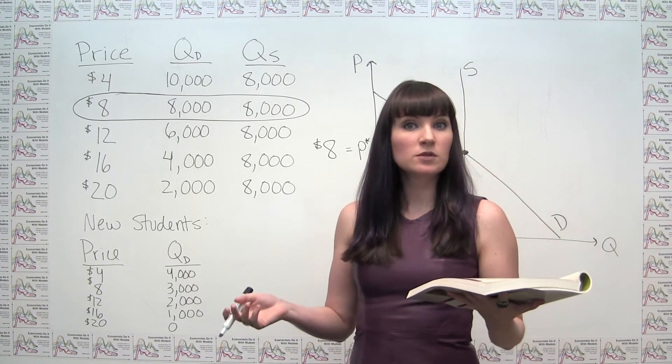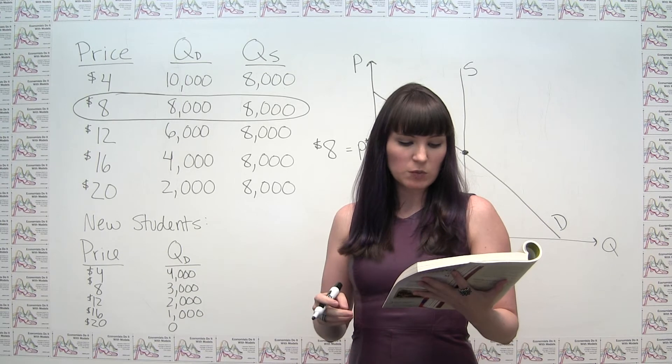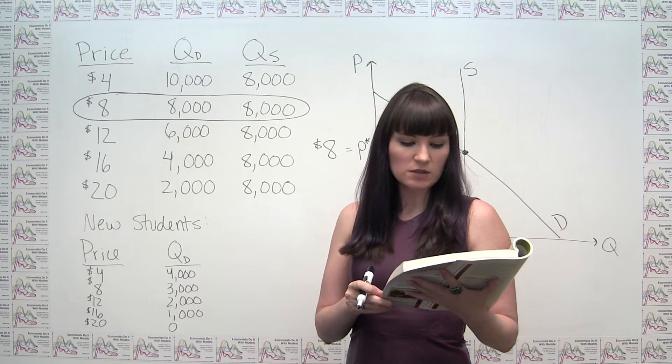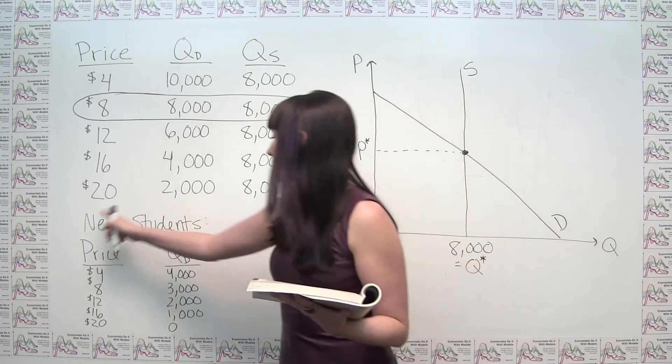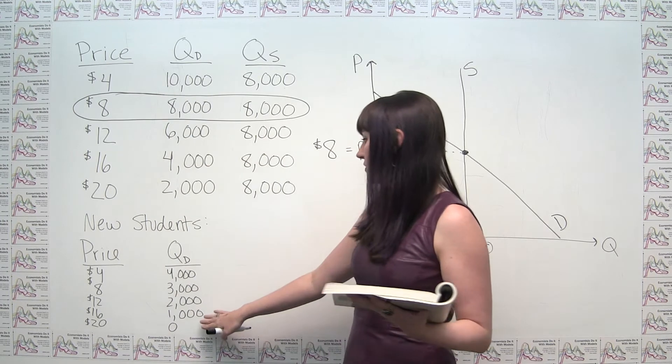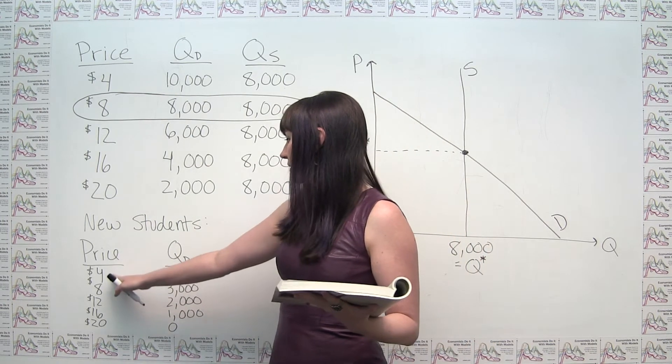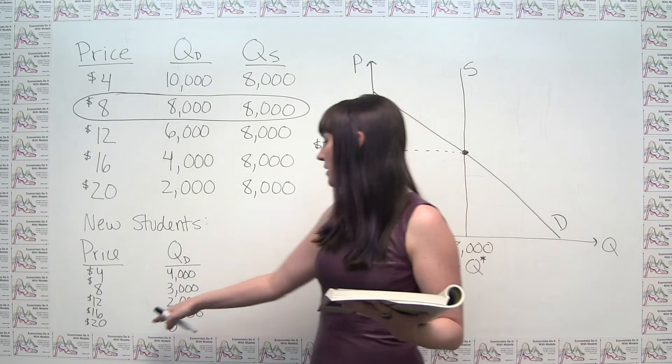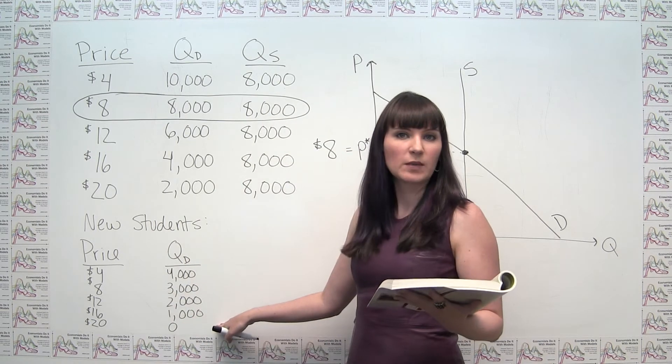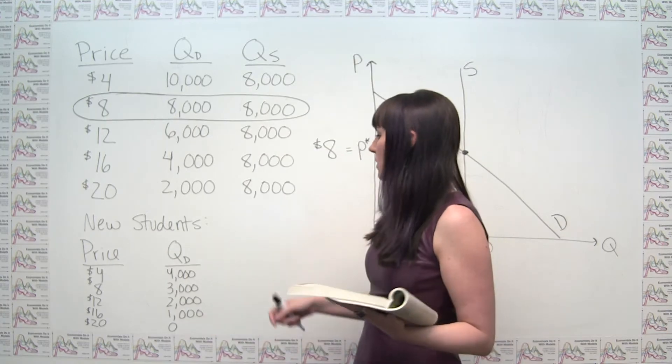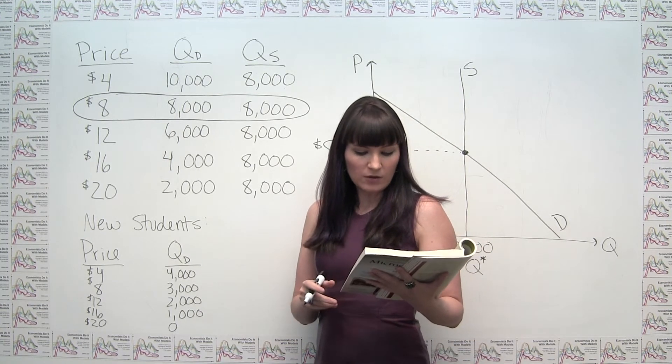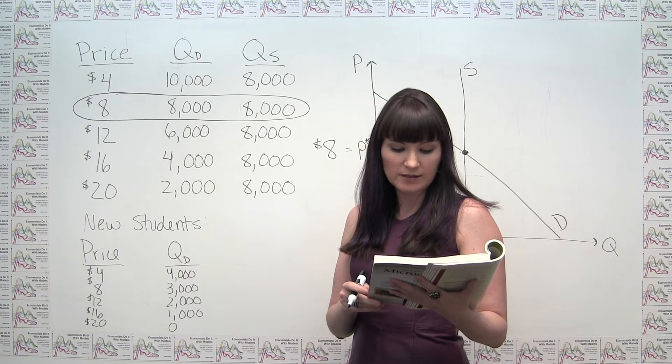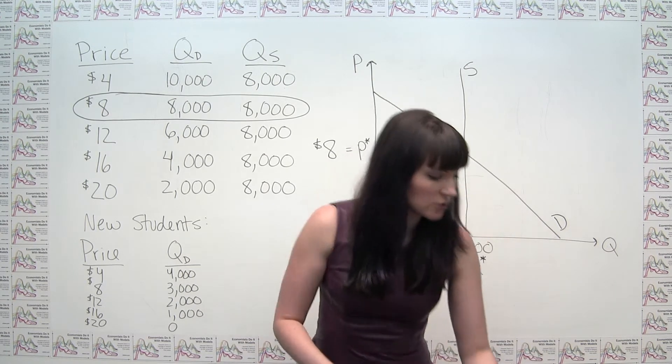Part C of the question gives us some new students at our school. It says, your college plans to increase total enrollment next year by 5,000 students. The additional students will have the following demand schedule. And then we're given this incremental demand for our new students. So again, we see at lower prices, we have more of the additional 5,000 students demanding basketball tickets. And at higher prices, we have fewer of the new students demanding tickets, which is what we would expect. And now we're given some instructions. It says, now add the old demand schedule and the demand schedule for the new students to calculate the new demand schedule for the entire college.